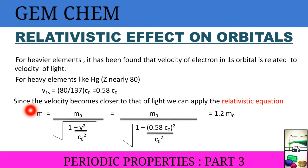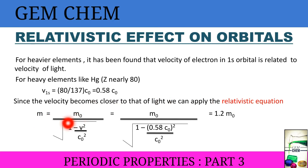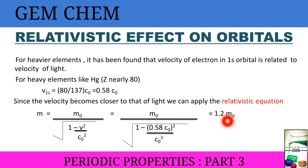Since the velocity becomes closer to the speed of light, we can apply the relativistic equation. From physics, we know the relativistic equation as m = m₀ / √(1 − v²/c₀²). Substituting v = 0.58 c₀, we get a value of approximately 1.2 m₀, where m₀ is the rest mass — the mass when the velocity of the electron is actually zero.